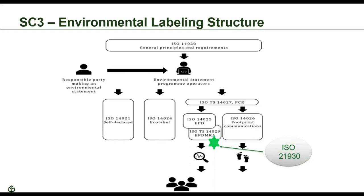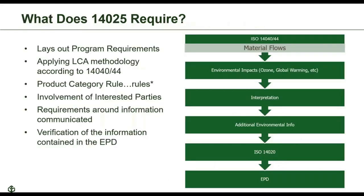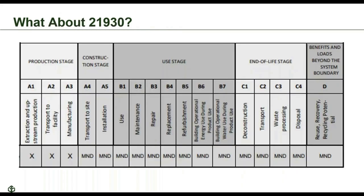ISO 14025 is still the controlling document at the end of the day. It basically lays out the program requirements for your program operator, how to use the LCA methodology laid out in the 14040 series of life cycle assessment standards, and how to put together product category rules. On top of the requirements in ISO 14020, 14027, and 14040 and 44, we in the construction sector follow 21930. This document provides additional guidance that works for construction products and gets us a step closer to our EPDs. In case you were wondering about that laundry list of standards — yes, ISO does charge by the document.